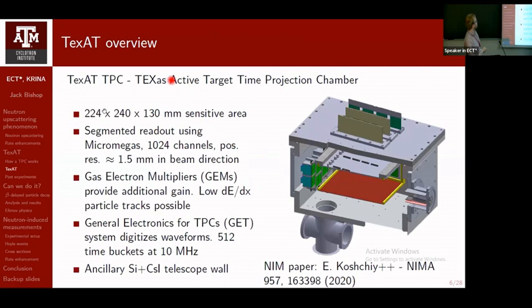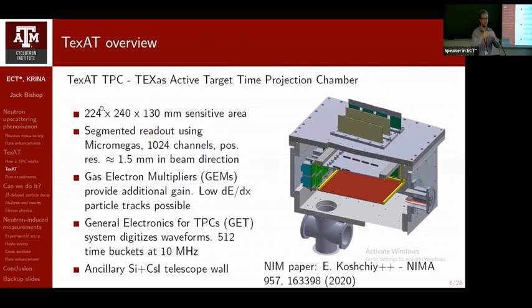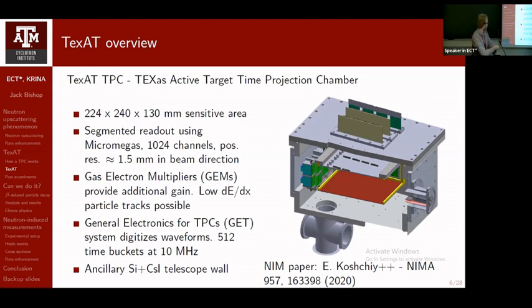The TEXAT-TPC has a sensitive area of 224 by 240 mm. The segmented readout uses a micromegas configuration with 1,024 channels, giving position sensitivity of about 1.5 mm along the beam direction. For low-energy deposition particles, we added intermediate gas electron multipliers, which provide additional gain through an avalanche process. The electronics use the GET system, which fully digitizes the waveform, sampled at 512 time buckets at 10 MHz.